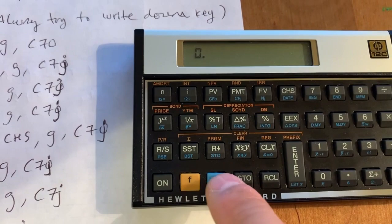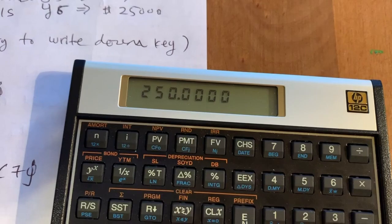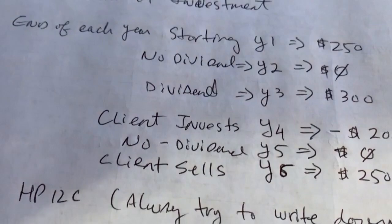Then the first year, you're going to get $250. So $250, CFJ. Second year, $0, CF0. Third year, $300, CFJ.